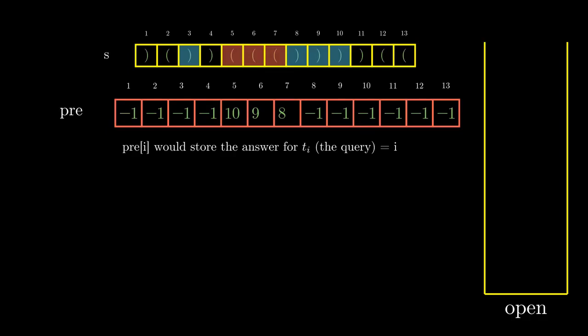The next valid bracket sequence is from 5 to 10, like in the previous case. So for each closing bracket that occurs before a valid opening bracket, we need to set pre of that closing bracket to pre of that first valid opening bracket, which will be to the right of it. For example here, we will set pre[3] and pre[4] to pre[5], which is 10.